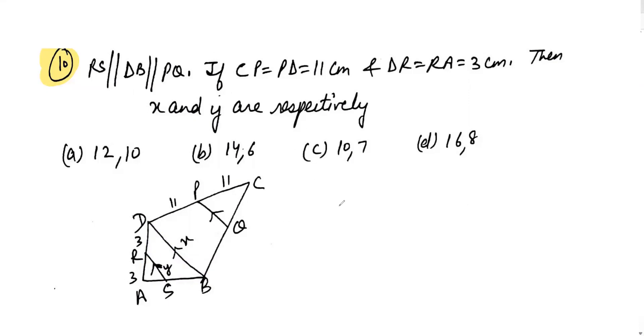From BPT, what we can say is that the ratio of AR to AD will be equal to AS to AB, that should be equal to RS to DD.